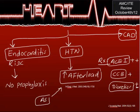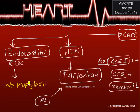Regarding treatment of comorbidities: if the patient has endocarditis risk, the new guidelines are straightforward — no prophylaxis is required for aortic stenosis. The new endocarditis guidelines eliminated prophylaxis for many conditions, including mitral valve prolapse with or without murmur. Prophylaxis is now only for specific high-risk conditions, not for aortic stenosis.